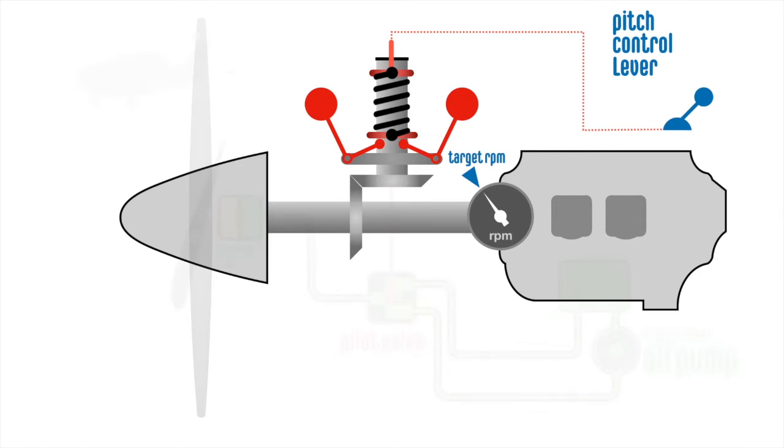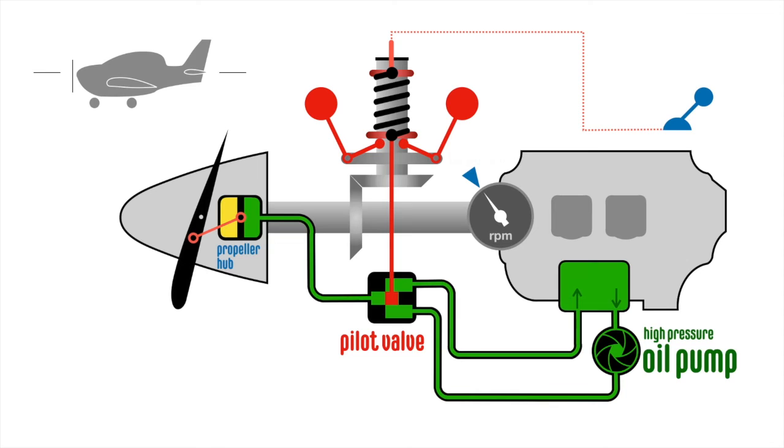The governor flyweights are connected to the pilot valve. This valve acts like a gate that directs oil to or from the propeller hub which in turn sets the required propeller blade angle.